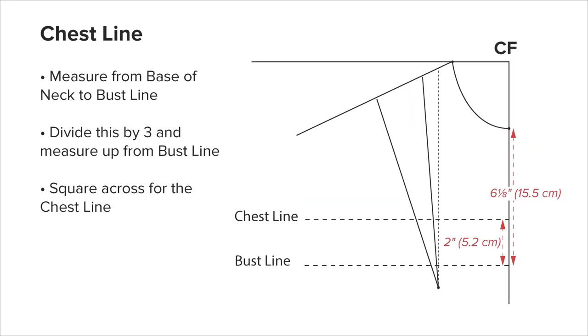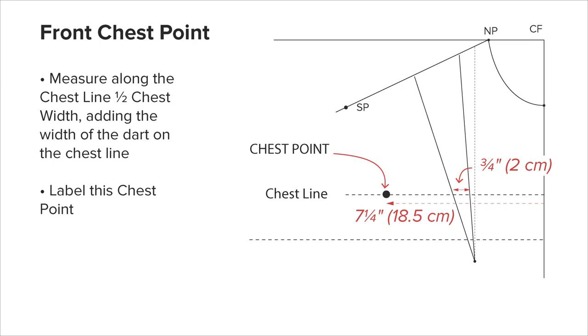The chest line: measure the distance from the base of the neck to the bust line, divide this by 3, and measure that distance up from the bust line. Square across and label it the chest line. The front chest point: measure along the chest line one and a half times chest width plus the width of the dart at this level, and mark chest point.